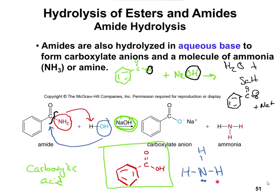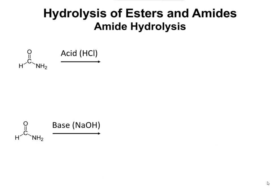Let's try two more examples. Both structures we're starting with is formamide — a one-carbon-long amide based on formic acid, with the ending changed to amide. The question is what happens when it's hydrolyzed in the presence of acid and in the presence of base.